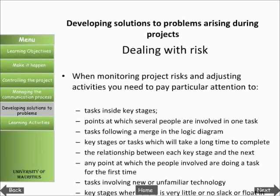Key stages where there is very little or no slack or float in the schedule. When a risk becomes reality, its implications must be assessed, including the effect on costs and resources, possible consequences if the problem is not addressed, which aspects of the project are affected, and how serious the problem is thought to be. Depending on the reporting arrangements you have in place, you may need to notify your sponsors of any problems immediately. It is more likely, however, that you would want to identify possible solutions first, so that you can make recommendations for action at the same time.